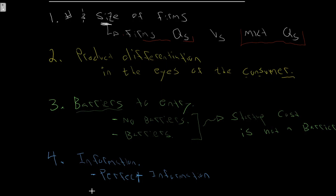The opposite of that is asymmetric information, which we will introduce at a later point. Asymmetric information looks at what happens when certain economic agents have access to information that others don't, and how they can use that access to get an outcome that maybe fits them better.